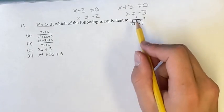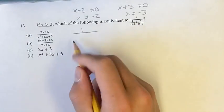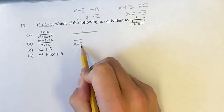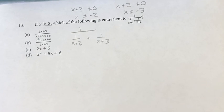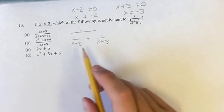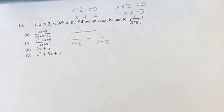So we have 1 over 1 over x plus 2 plus 1 over x plus 3. Now we want to get these, if we're adding them together, to have a common denominator.